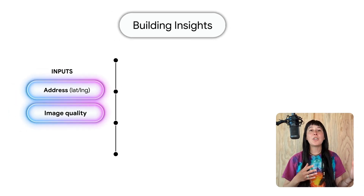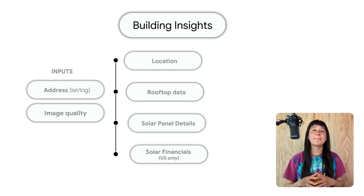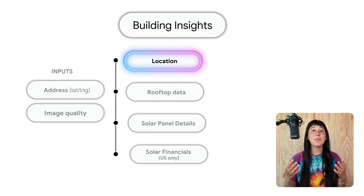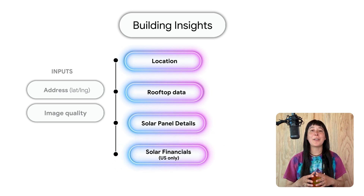With both the location and imagery type, you currently get back information from these four buckets: location, rooftop data, solar panel details, and solar financials.